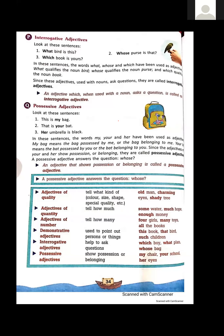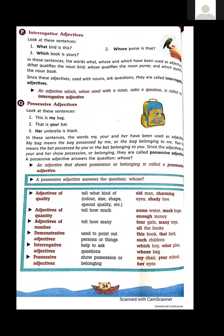A revision table is given. Adjectives of quality tell us what kind — color, size, shape, special quality — like 'old man', 'charming eyes', 'shady tree'. Adjectives of quantity tell us how much, like 'some water', 'much hope', 'enough money' — water, hope, and money are all uncountable nouns.